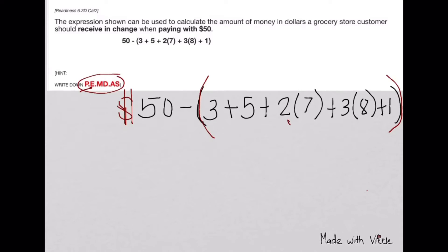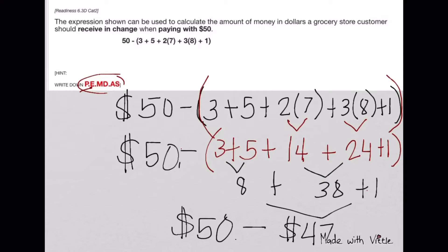We have multiplication here and here, so we have to do them first. Then bring down the rest of the expression. Now we add everything to find the total cost. The last thing to do is subtract it from the money that the customer is handing the cashier.